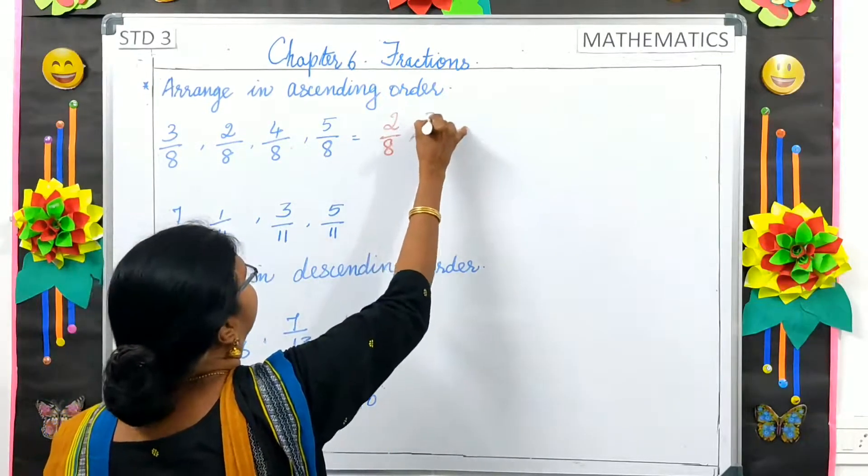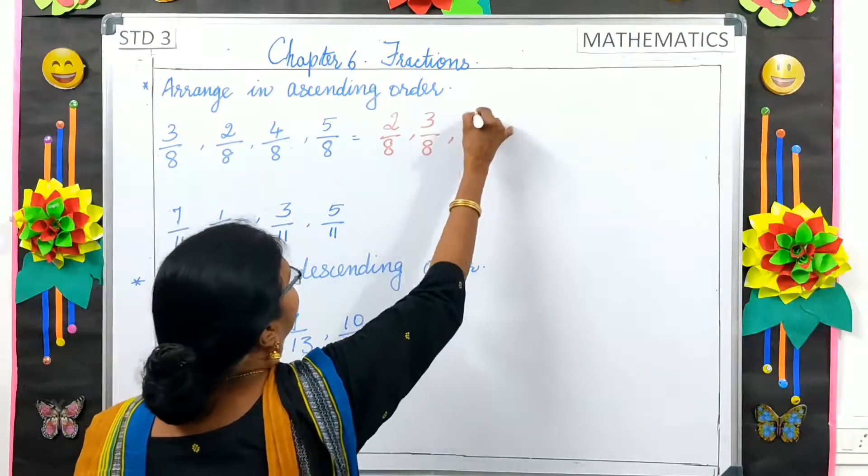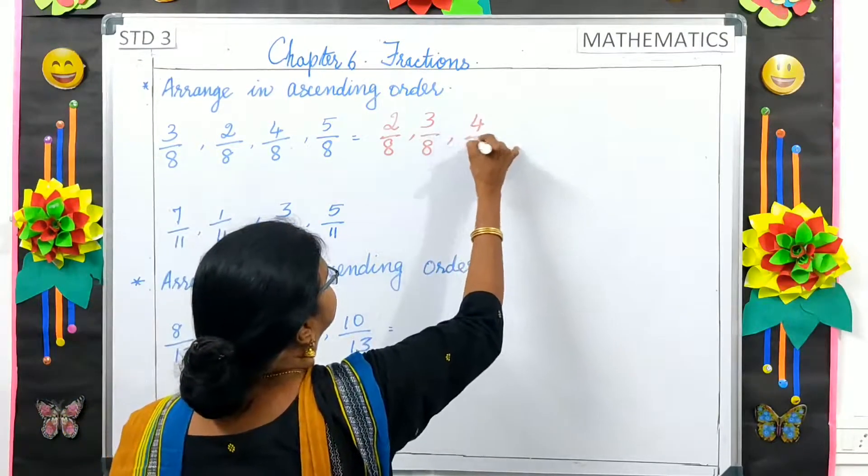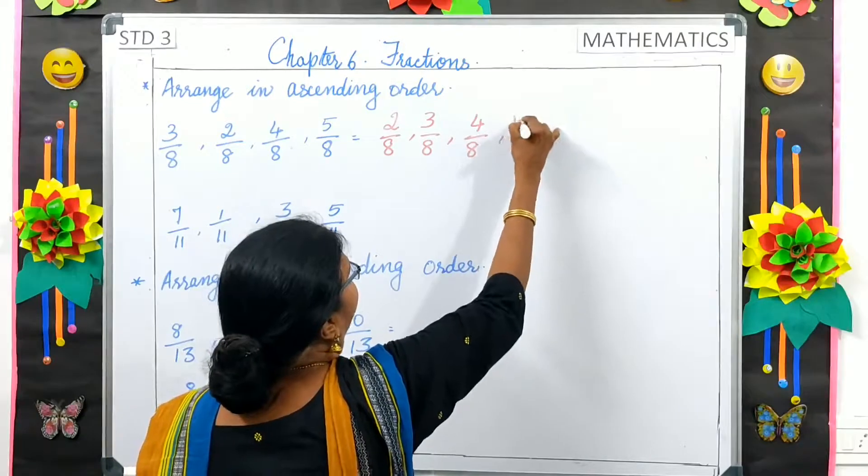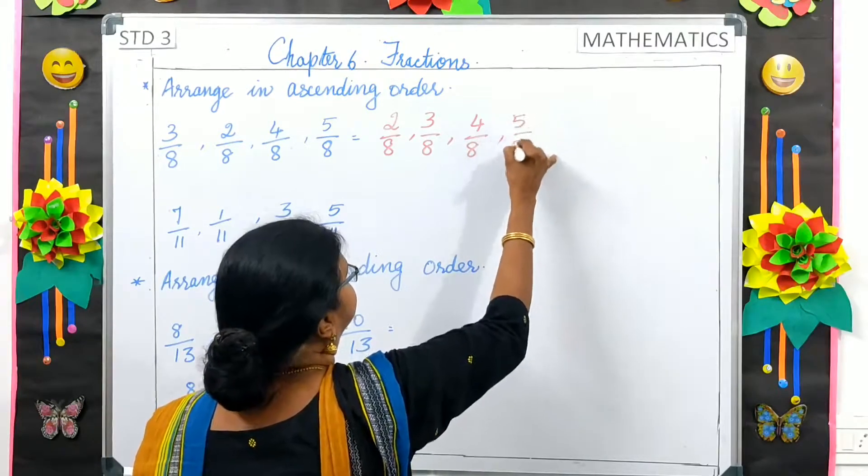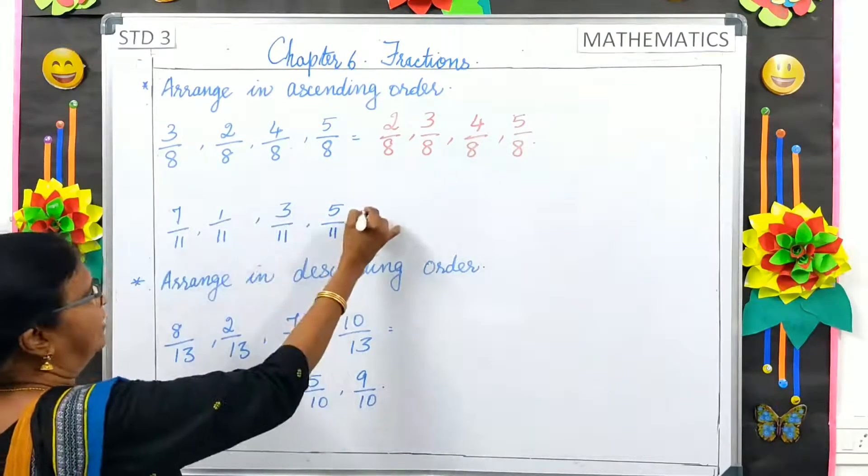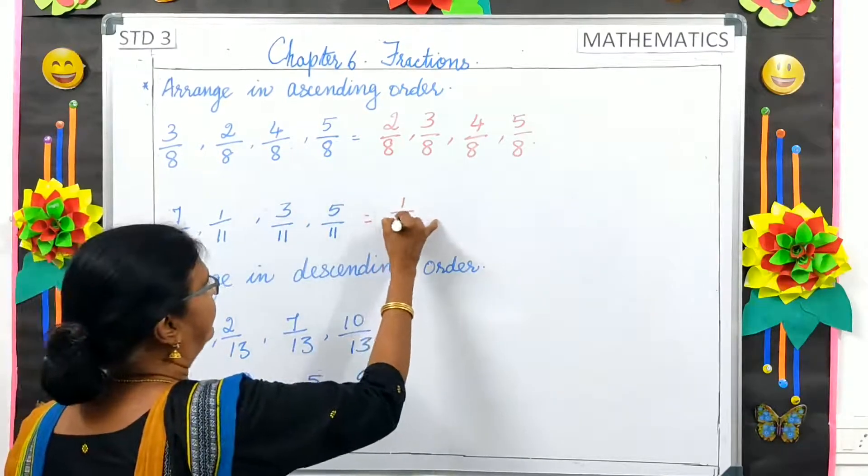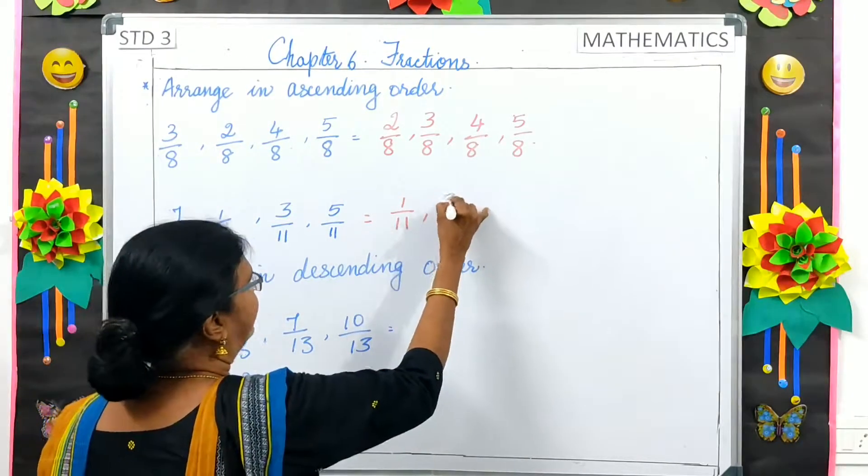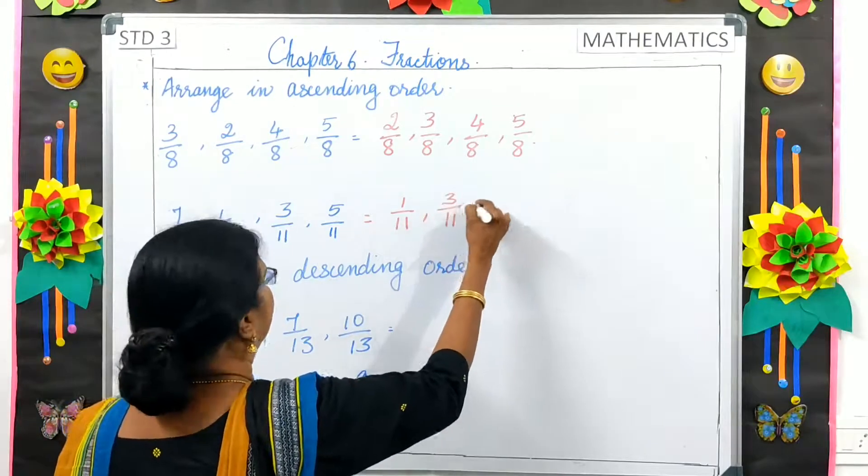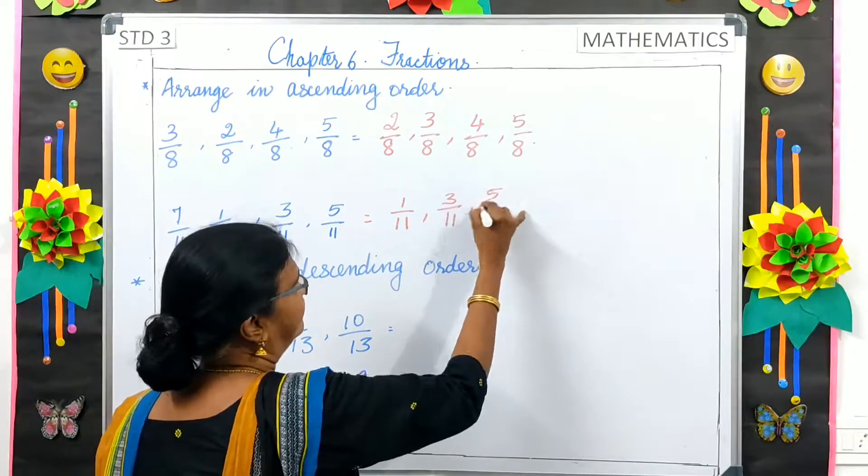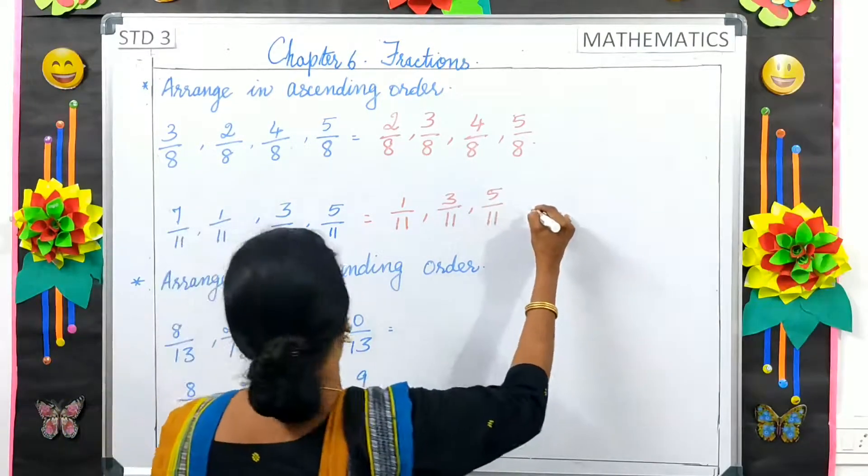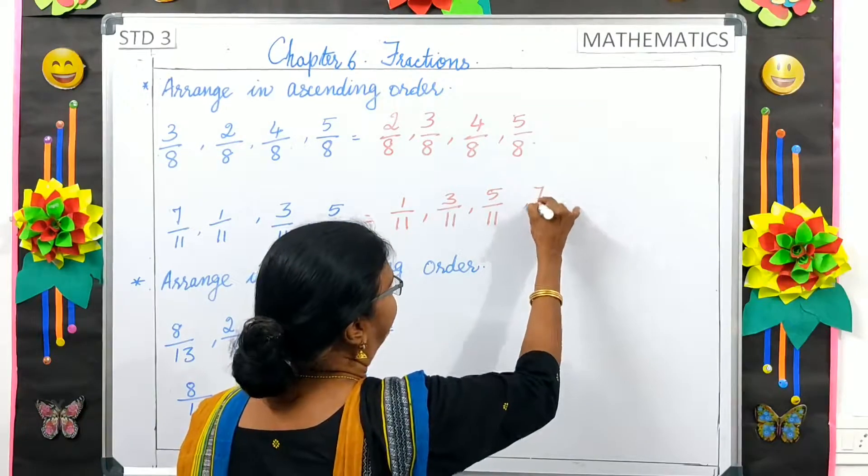Then, 3 by 8, 4 by 8, then 5 by 8. The same way, here, 1 by 11, 3 by 11, 5 by 11, and 7 by 11.